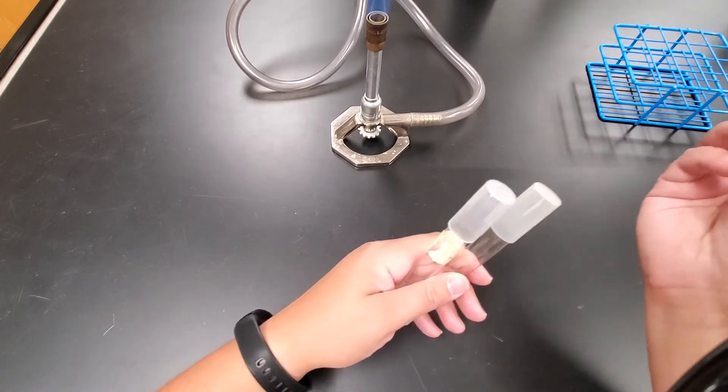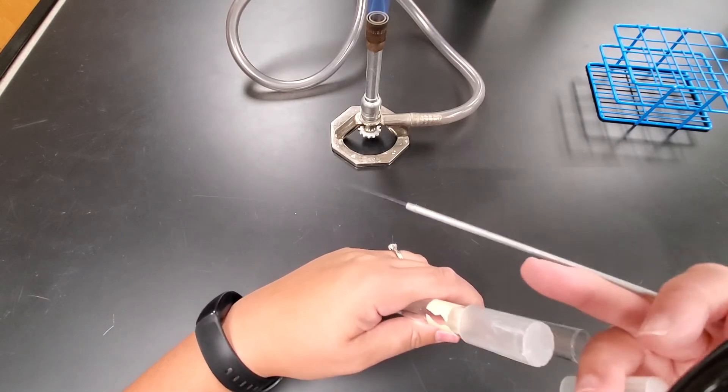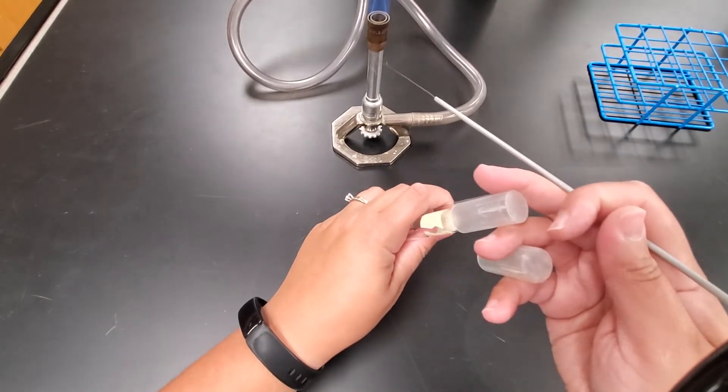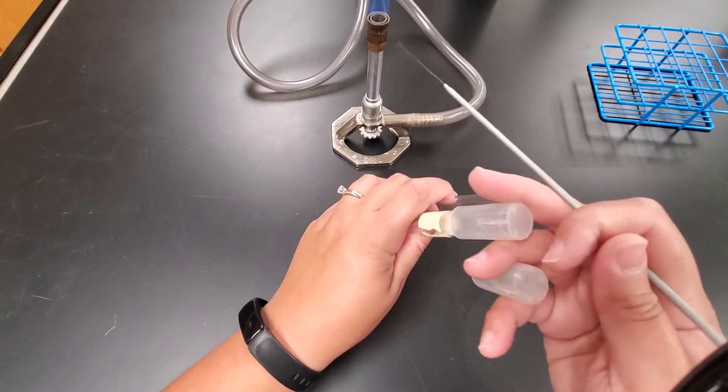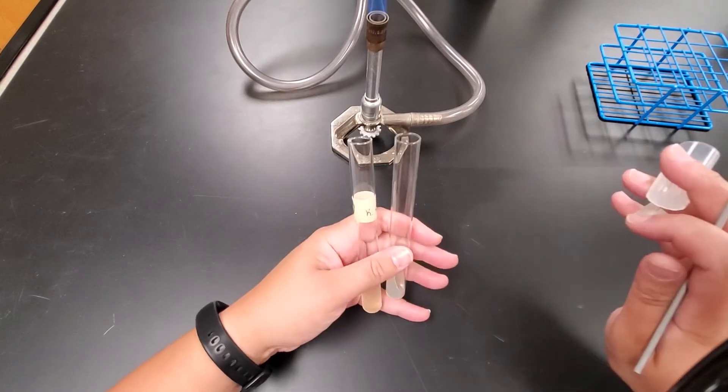What I need to do now is uncap these tubes. So I'm going to take one of the caps in between my pinky and my ring finger and another cap in between my middle and my ring finger. And you'll notice that the way I'm holding it, the caps are pointed away from me.